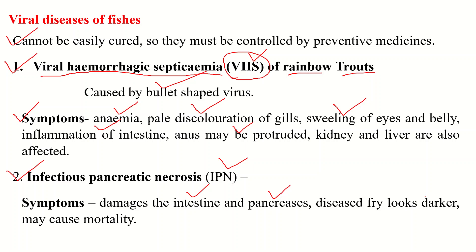The affected fish appears darker in color and can swim in a spiral fashion in the water. Due to accumulation of this disease, it may cause mortality in the fish.